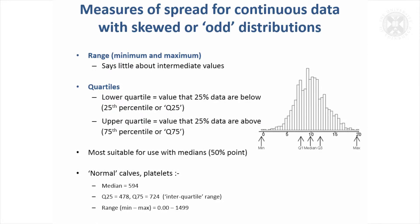So what if you're in a situation where you've got quite an odd distribution? You could get the minimum and the maximum for your distribution, but that doesn't say much about the values in the middle. So this would be the minimum and the maximum — it really doesn't tell you much at all about the data.